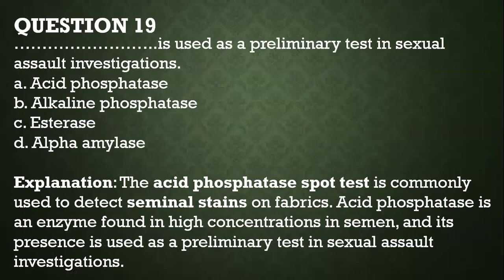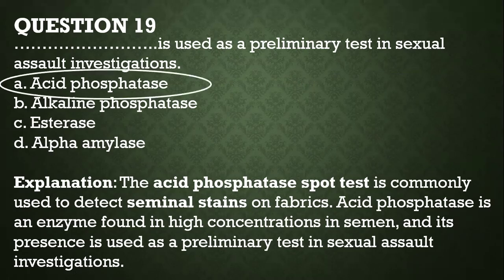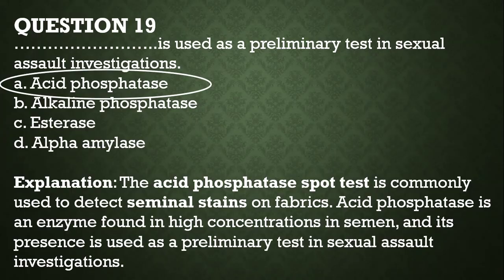What is used as a preliminary test in sexual assault investigations? The acid phosphatase spot test is commonly used to detect seminal stains from fabrics. Acid phosphatase is an enzyme found in high concentration in semen, and its presence is used as a preliminary test in sexual assault investigations.